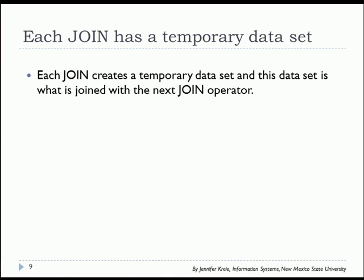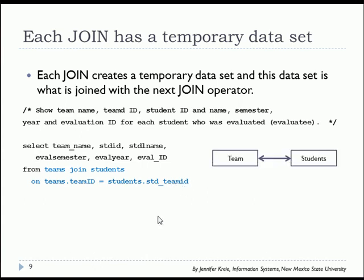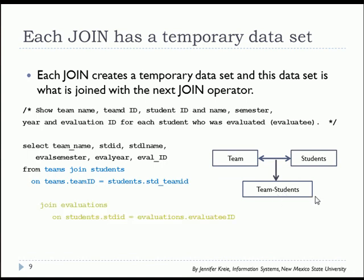Each join creates a temporary data set and this data set is what is joined with the next join operator when you have more than one join. Teams join students, the two common columns in those two tables. We have this result of data from teams and students. Then we will join this to evaluations.